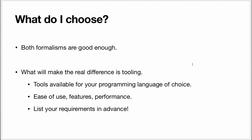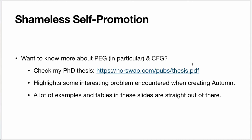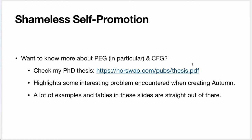So if you start a new project and are free to choose your parsing technology, should you go with PEG or CFG? The reality is that both formalisms are good enough — that's not the criteria you should use. What you should use as a criteria is the tool you're going to use. Have a look at what's available for the language you're going to work with, and list your requirements explicitly. In this presentation I reused examples and figures from my PhD thesis, which was about PEG parsing and the creation of the Autumn tool. If you want to know more, I encourage you to check it out. That's it for today. Next time we'll finally see what Chomsky hierarchy is, and I promise it will be a much shorter video. See you next time, take care.